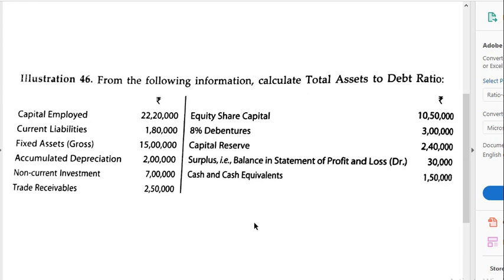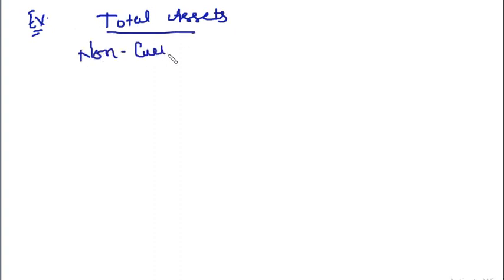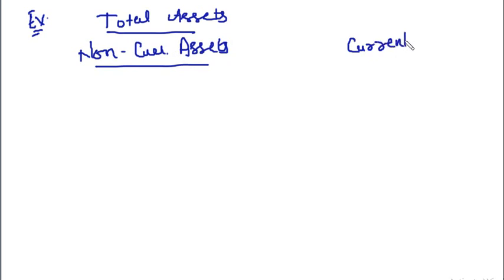We need two things: total assets and long-term debts. First of all we will calculate total assets. For this we will divide total assets into two categories: one is non-current assets and the other is current assets.